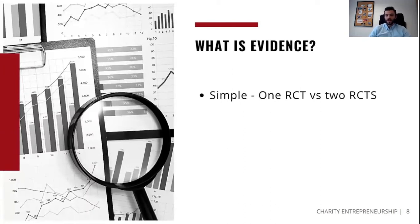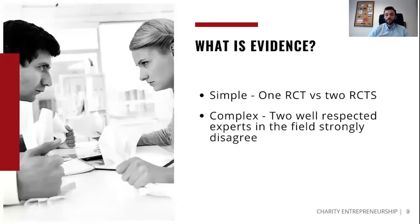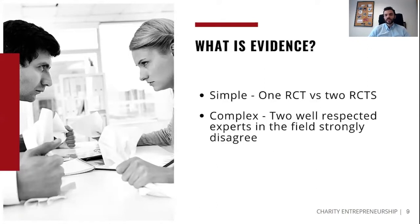Finally, there's evidence. One randomized control trial compared to two randomized control trials — people will generally prefer things with a higher level of evidence, as is done in the medical sector. But evidence can also get more complex. What if there are two well-respected experts who disagree in a field? What if one type of evidence indicates one intervention is better, but another type of evidence indicates another intervention is better? It's less clear what to do in these scenarios.